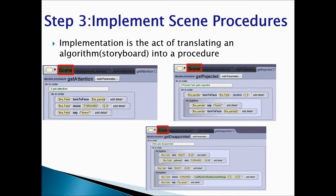We would create the three procedures in class Scene. The first procedure would be getAttention — we're going to write a comment and add our code. Our second procedure would be getRejected, then we add a comment and write our code. Our third procedure is getDisappointed — we add a comment and write our code. Then we'll have our fourth optional procedure, the end.